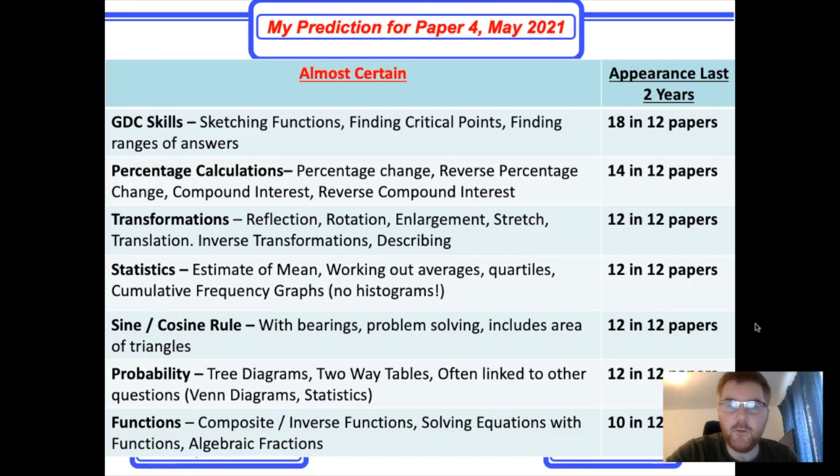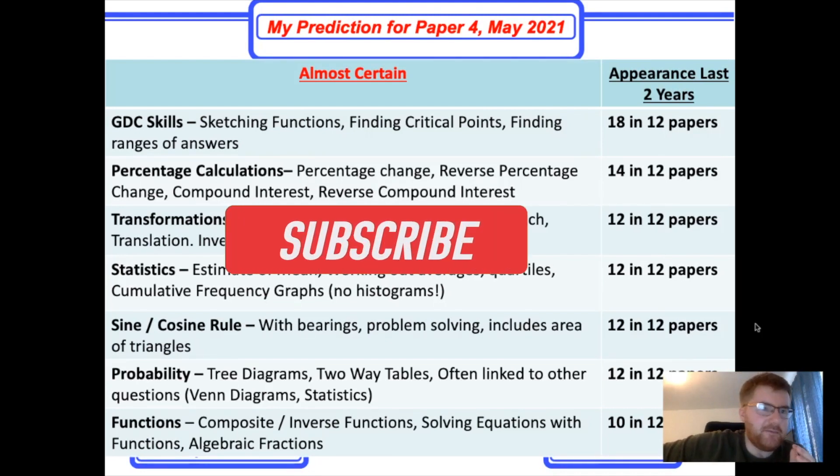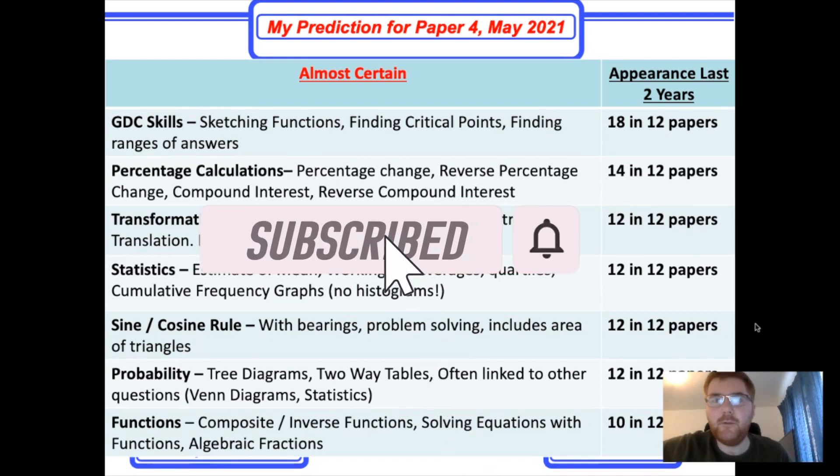And what you've been waiting for, which is my predictions for Paper 4 May 2021. Actually, it's going to be in April, right at the end of April. So as you can see here, the almost certain category is actually quite big. There are many topics that are going to come up very, very often. Before I start, please like and please subscribe. It goes a long way to helping the channel grow.